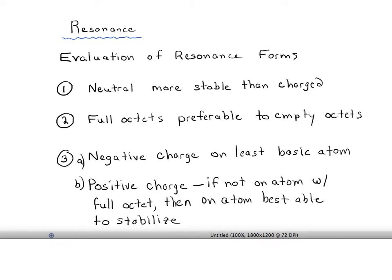Also, if you had a choice between an atom with less than a full octet between carbon, nitrogen, and oxygen, make sure you put less than a full octet on carbon.